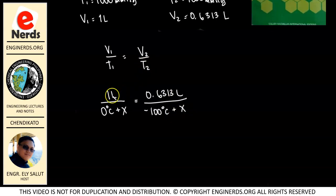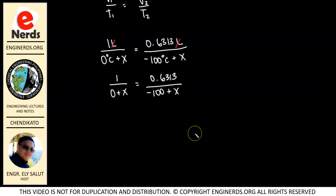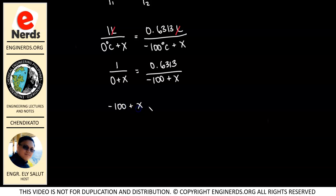The units in the numerator are the same so we can cancel them out. We are working with degrees Celsius, so let me remove the units to make the calculation easier. We have 1 over (0 + X) equals 0.6313 over (negative 100 + X). We need to isolate variable X, so solving this algebraically: negative 100 plus X equals 0.6313 times X.